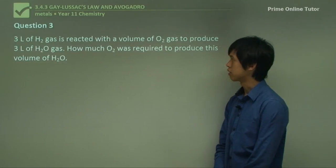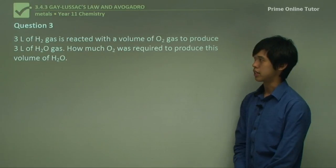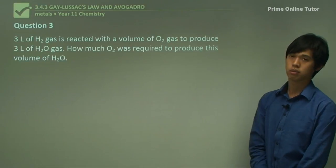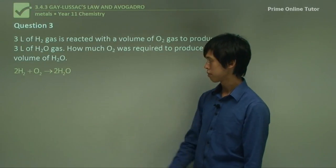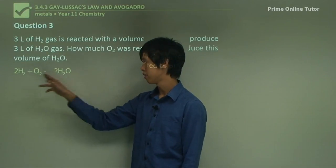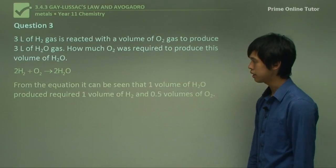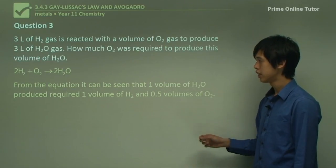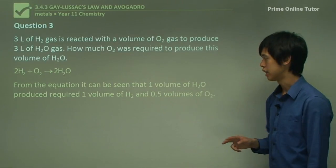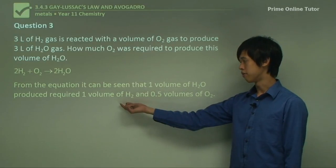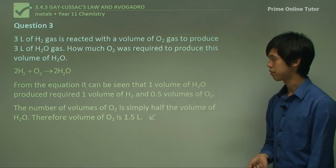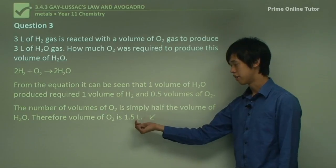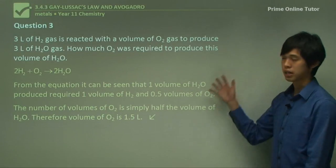3 liters of H2 gas is reacted with a volume of O2 gas to produce 3 liters of H2O gas. How much O2 was required to produce this volume of H2O? So how much oxygen did we need? Well we start again with the chemical equation. H2 plus O2 gives you H2O and you just put 2's here to balance the equation. So from the equation you can be seen that one volume of H2O produced required one volume of H2 and half the volumes of O2. So 1 volume of H2O gives you 1 volume of H2 and half the volume of O2. The number of volumes of O2 is simply half the volume of H2O. So therefore the volume of O2 is simply 1.5 liters. So it's very simple maths to go through this.